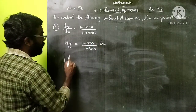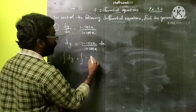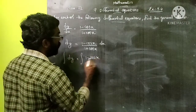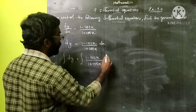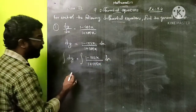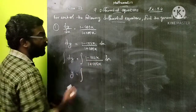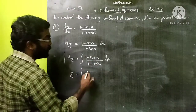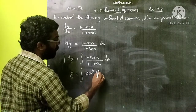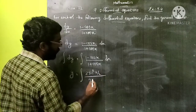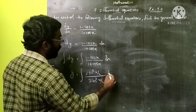Now we can integrate. Integral dy = integral of (1 - cos x)/(1 + cos x) dx. We know integral dy is y. Here we can apply the trigonometric formula: 1 - cos x = 2sin²(x/2) and 1 + cos x = 2cos²(x/2) dx.